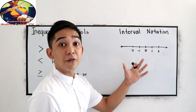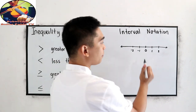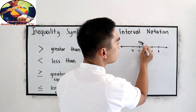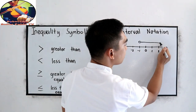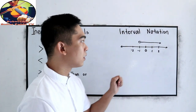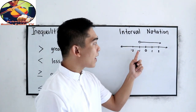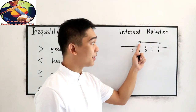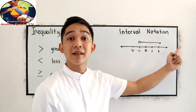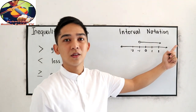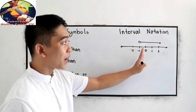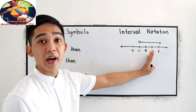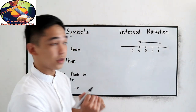Let's say in our final answer we have this output on the number line: negative 1 with a hollow circle, then going to positive infinity. Before we write that in interval form, let us first familiarize the different symbols that we're going to use.